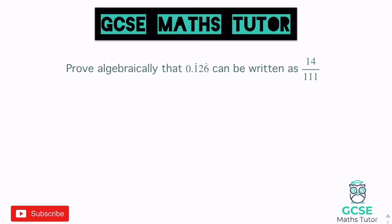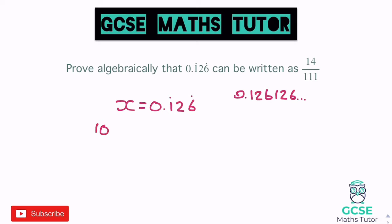The recurring dots start on the 1 and end on the 6, meaning the full pattern of 1, 2, 6 is recurring. If I write it out, it'd be 0.126 and then another 1, 2, 6, just keeping going. So be careful — it's not just the 1 and the 6, it's the whole 1, 2, 6 pattern indicated by the dots. Following the same approach: x equals 0.126. If I times it by 10 that wouldn't work with three recurring decimals.